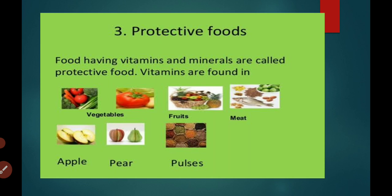Boiling method: we boil the food to cook. Steaming method: we cook the food with the help of steam. Frying method: we keep the food items in hot oil to cook. Roasting method: we keep the food items directly over heat to cook. Baking method: we cook the food with the help of dry fire.